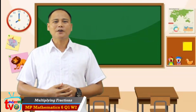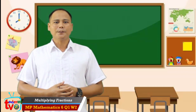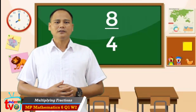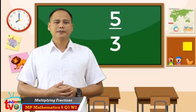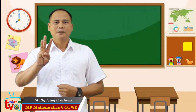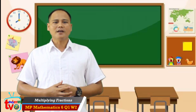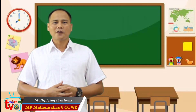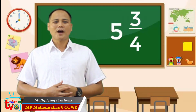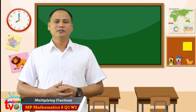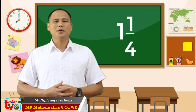Second, improper fraction. We call it an improper fraction when the numerator is greater than the denominator. The examples are 8 over 4 and 5 over 3. And the third, mixed numbers, wherein it is composed of a whole number and a fraction. Here are the examples: 5 and 3 fourths, where 5 is the whole number and 3 fourths is the fraction; and 1 and 1 fourth, where 1 is the whole number and 1 fourth is the fraction.